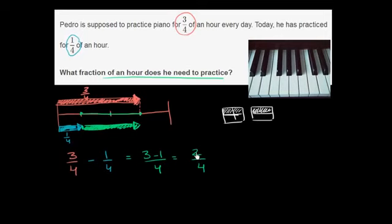And if you wanted to work it out mathematically, you just have to do the same thing to the numerator and the denominator. So let's divide the numerator and the denominator by 2, because they are both divisible by 2. That's actually their greatest common factor. So 2 divided by 2 is 1. 4 divided by 2 is 2. So what fraction of an hour does he need to practice? He's got to practice half an hour.